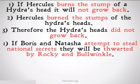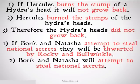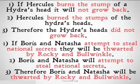If Boris and Natasha attempt to steal national secrets, they will be thwarted by Rocky and Bullwinkle. Boris and Natasha will attempt to steal national secrets, therefore Boris and Natasha will be thwarted by Rocky and Bullwinkle.